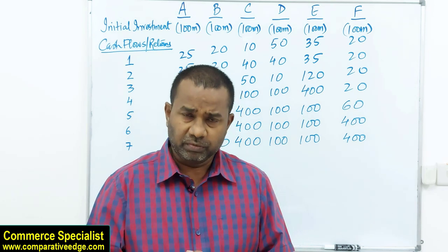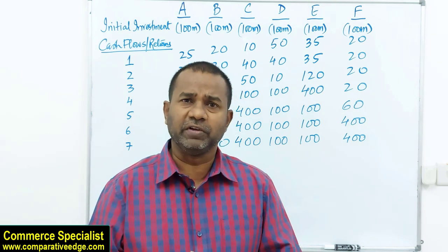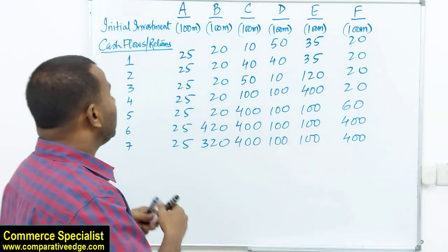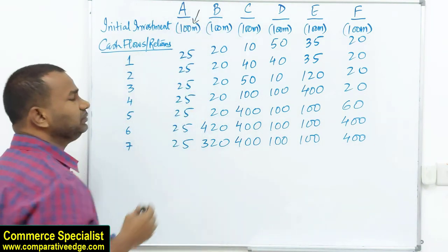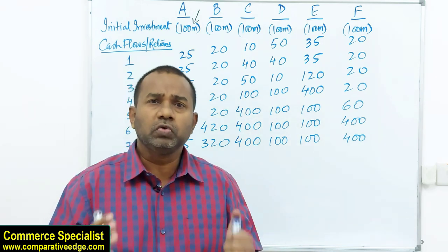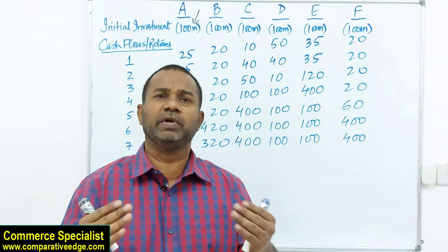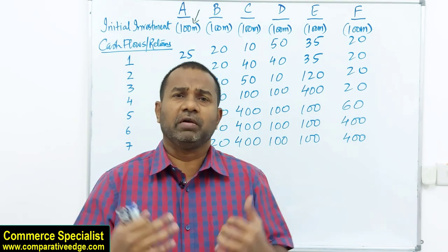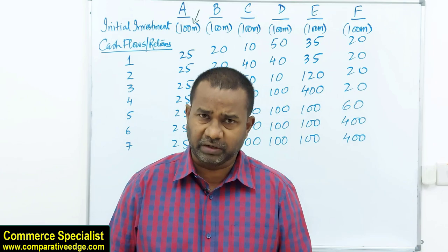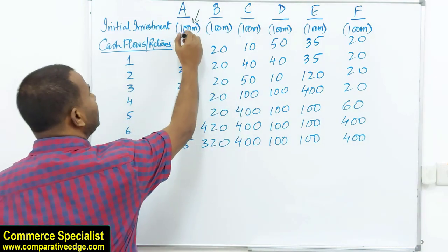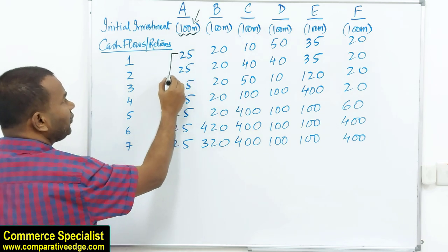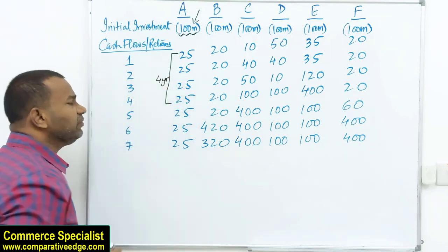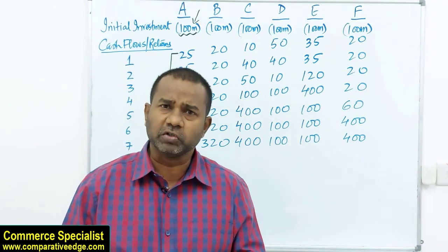We apply the first tool of investment appraisal: payback period. For payback period, we look at how soon we get our initial investment back. If we invest 100 million in project A and get 25, 50, 75 — we recover 100 million in 4 years. So the payback for project A is 4 years.